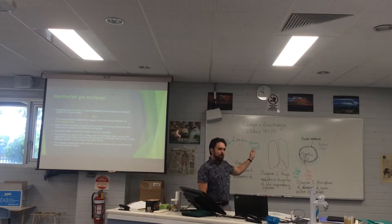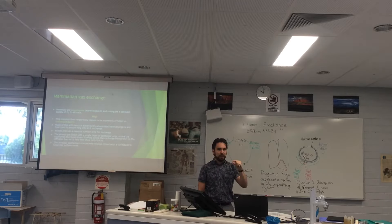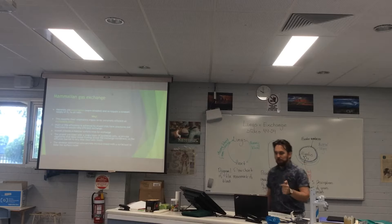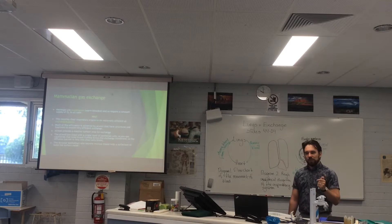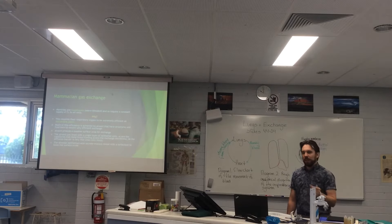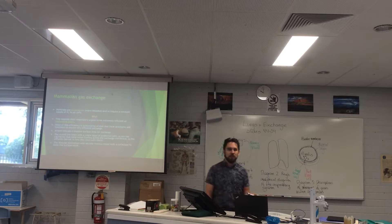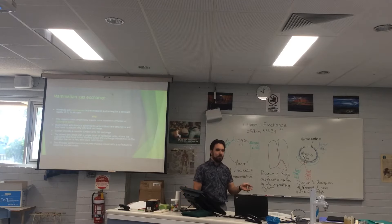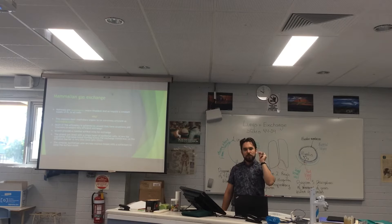Looking at our four exchange surfaces — our membrane which is four things thick — this doesn't seem like a very efficient system, but it's as efficient as it can be. The alveoli provide a massive surface area for exchange. We've got hundreds of thousands, probably millions of alveoli in each lung, and we have two lungs, so that each breath — containing around four litres of air — is exposed to as much of the blood as possible.